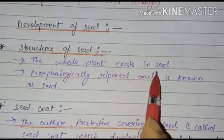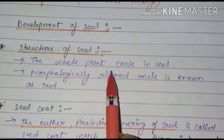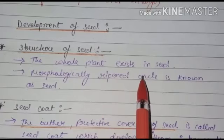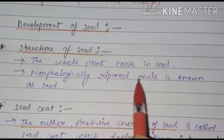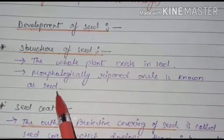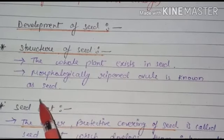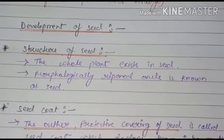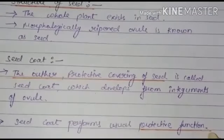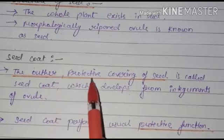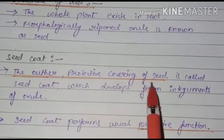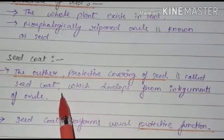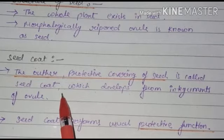First of all we have to know about the structure of seeds. The whole plant exists in a seed. Morphologically, a ripened ovule is known as a seed — the ovule is converted into a seed. Now, the seed coat: the outer protective covering of the seed is called the seed coat — the outer thin layer we can see in a seed.